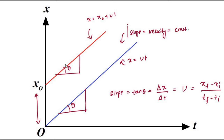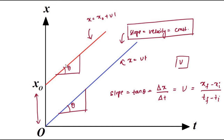The slope is constant and velocity is constant. The displacement-time graph passes through the origin for zero initial displacement, or starts at a value above the origin on the displacement axis for some initial displacement x₀. But the slope tan θ remains constant for both cases because the object travels with constant velocity v.